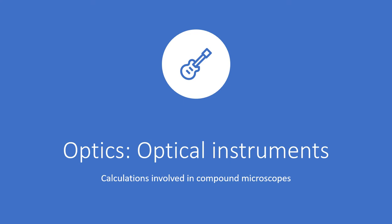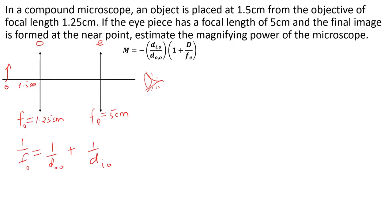Welcome to this lesson in optics, specifically optical instruments. The subtopic is calculations involved in compound microscopes. In a compound microscope, an object is placed 1.5 cm from the objective of focal length 1.25 cm. If the eyepiece has a focal length of 5 cm and the final image is formed at the near point, estimate the magnifying power of the microscope.